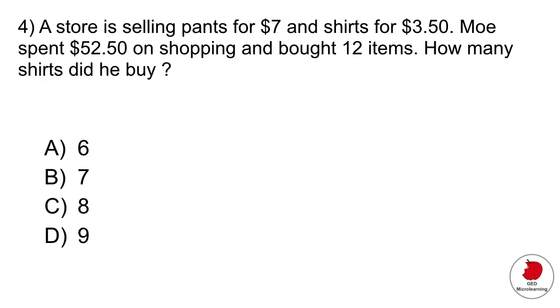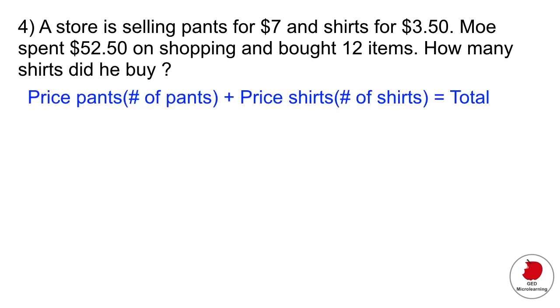A store is selling pants for $7 and shirts for $3.50. Mo spent $52.50 on shopping and bought 12 items. How many shirts did he buy? All right so the first thing that I like to do is kind of write the equation out in words. So we know that the price of pants we would have to multiply that by the number of pants he bought plus the cost of the shirt multiplied by how many shirts he bought and that would give us the total. So if we plug in the numbers that we have into the equation it would look something like this.